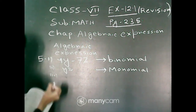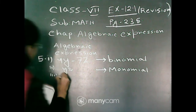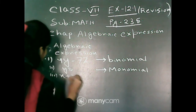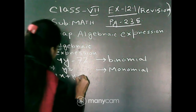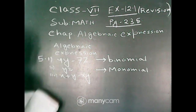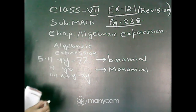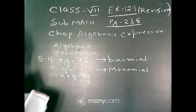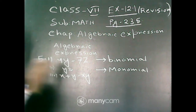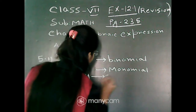Next, question number 3. Here the given algebraic expression is x plus y minus xy. This algebraic expression contains 3 terms: x, y, and minus xy, and the variables are x and y. So it is a trinomial.